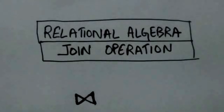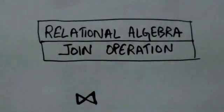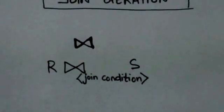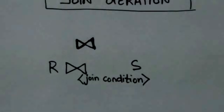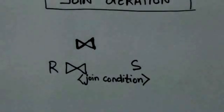Hello friends, welcome back. In this tutorial we will study about the join operation of relational algebra. The join operation is denoted by this symbol. The general form of join operation on two relations R and S is this. The result of this join operation is a relation which has one tuple for each combination of tuples of relations R and S which satisfies the given join condition. The join condition is specified on attributes from two relations R and S.